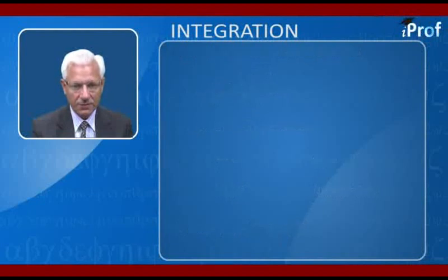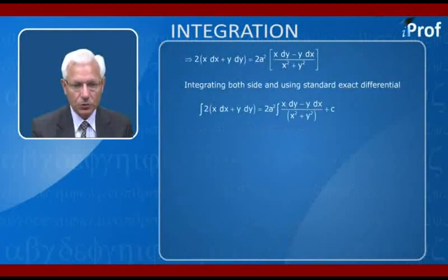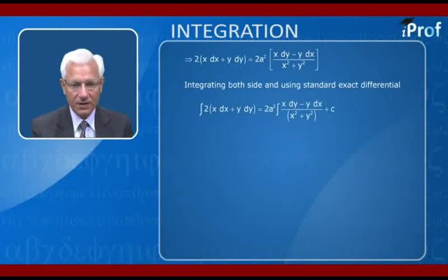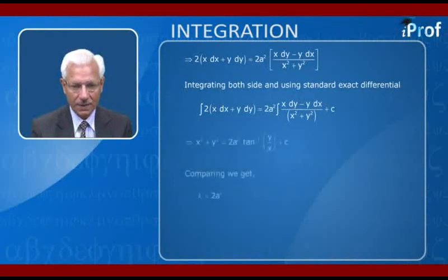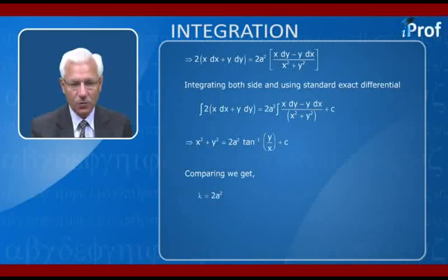Multiplying both sides by 2: 2(x dx + y dy) = 2a²(x dy − y dx)/(x² + y²). Integrating both sides using standard exact differential formulas, the left-hand side becomes x² + y², and on the right-hand side we get 2a²·tan⁻¹(y/x) + c.